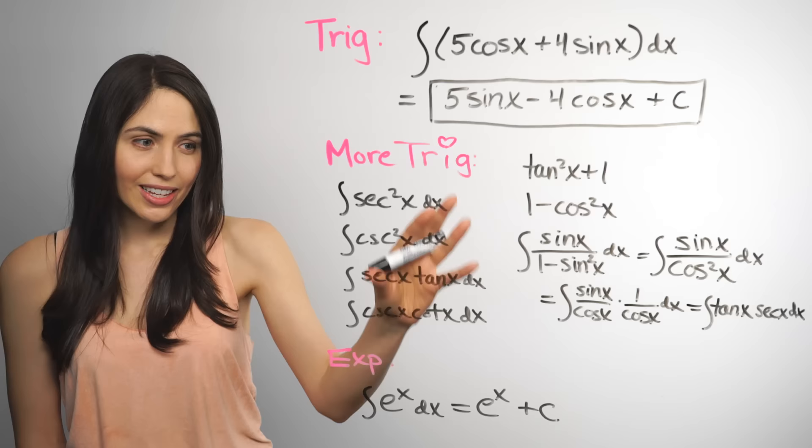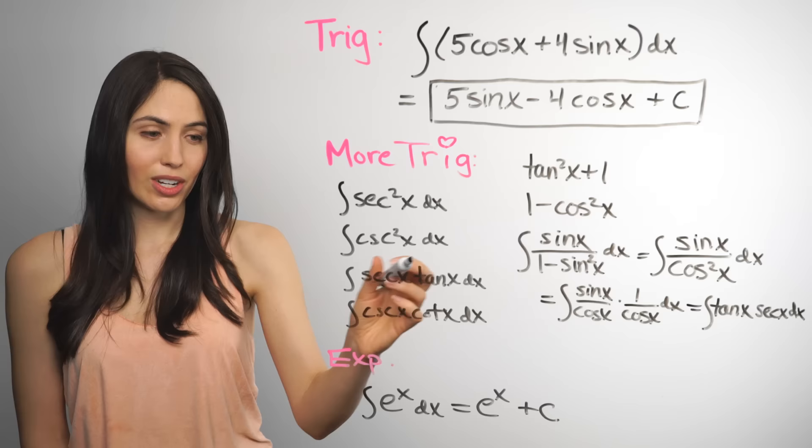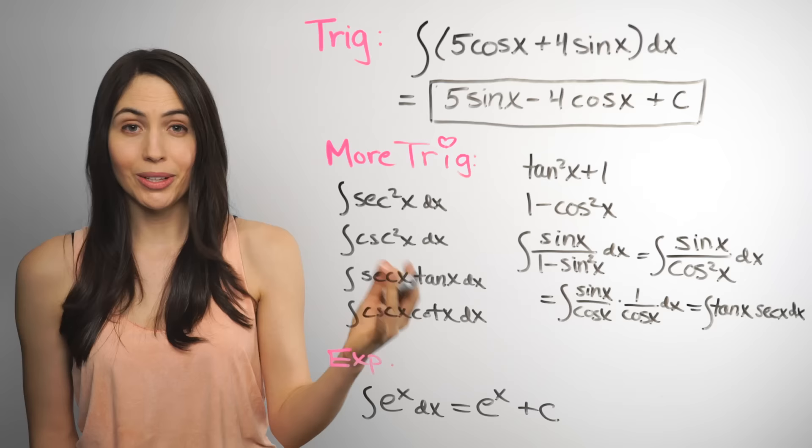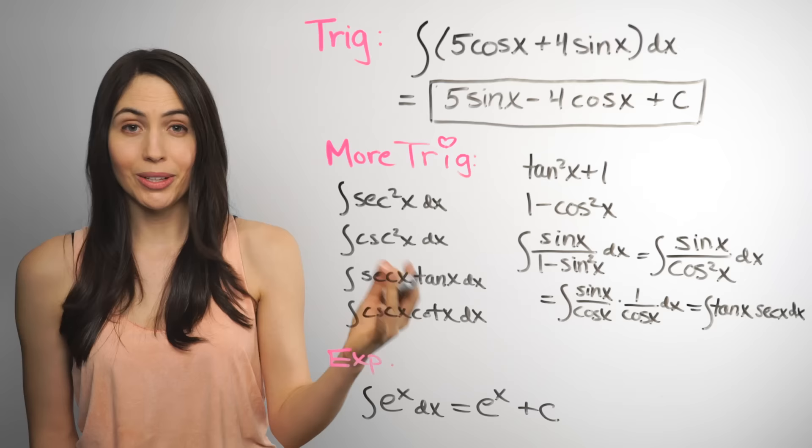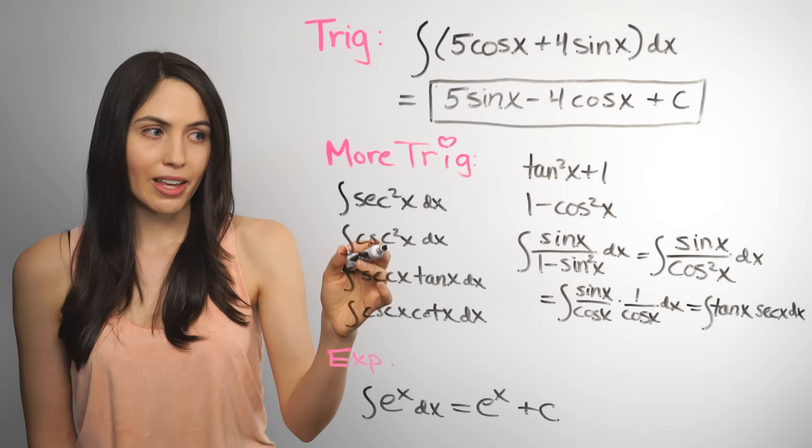So more trig. If you see things like these, integrals of secant squared, cosecant squared, secant tangent, cosecant cotangent. These are things from the table of integrals. You can look up what they're equal to, like this is tangent, this equals negative cotangent, this is secant, this is negative cosecant.